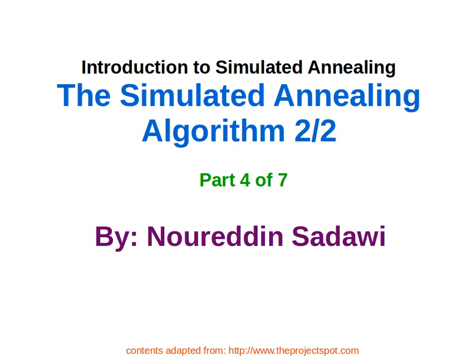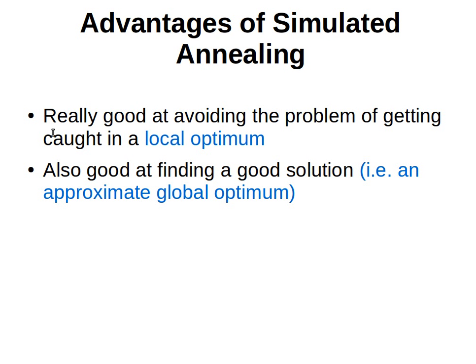Welcome back. We continue our explanation of the simulated annealing algorithm. This is the second part of explaining how the algorithm works and the fourth part of the series in general. The advantages of simulated annealing may be over genetic algorithms or over hill climbing. Hill climbing is another simple and easy-to-understand algorithm to solve search problems. The advantages are that this algorithm is really good at avoiding the problem of getting stuck in a local optimum.